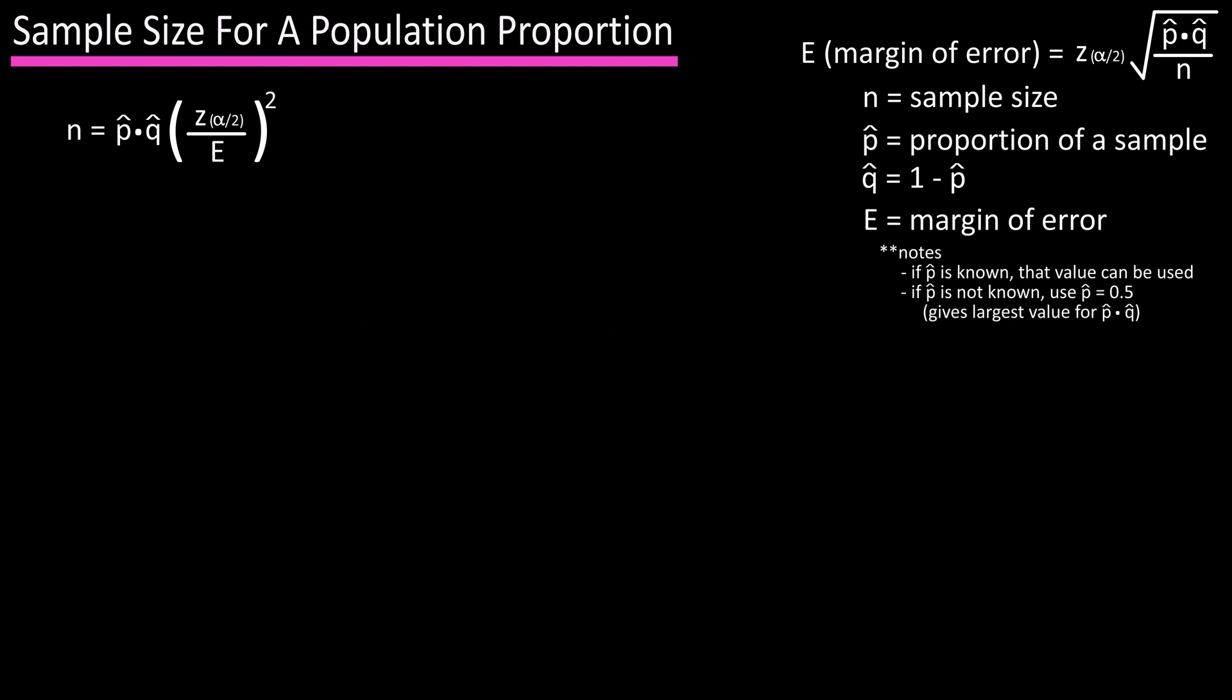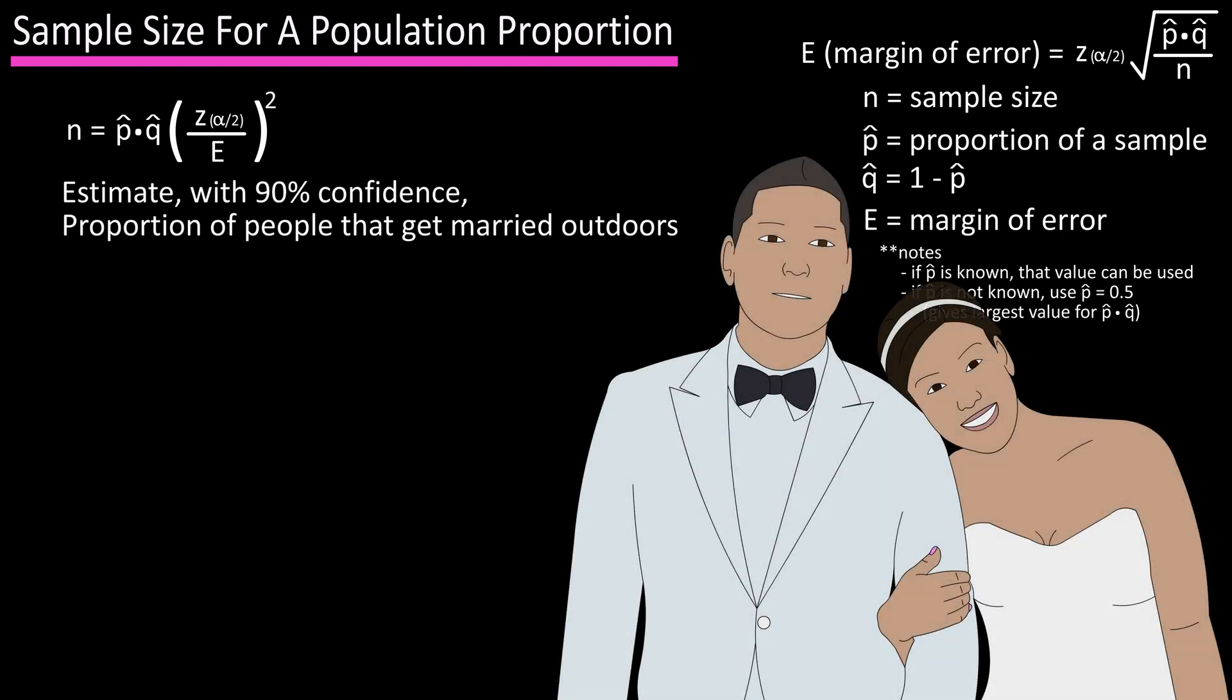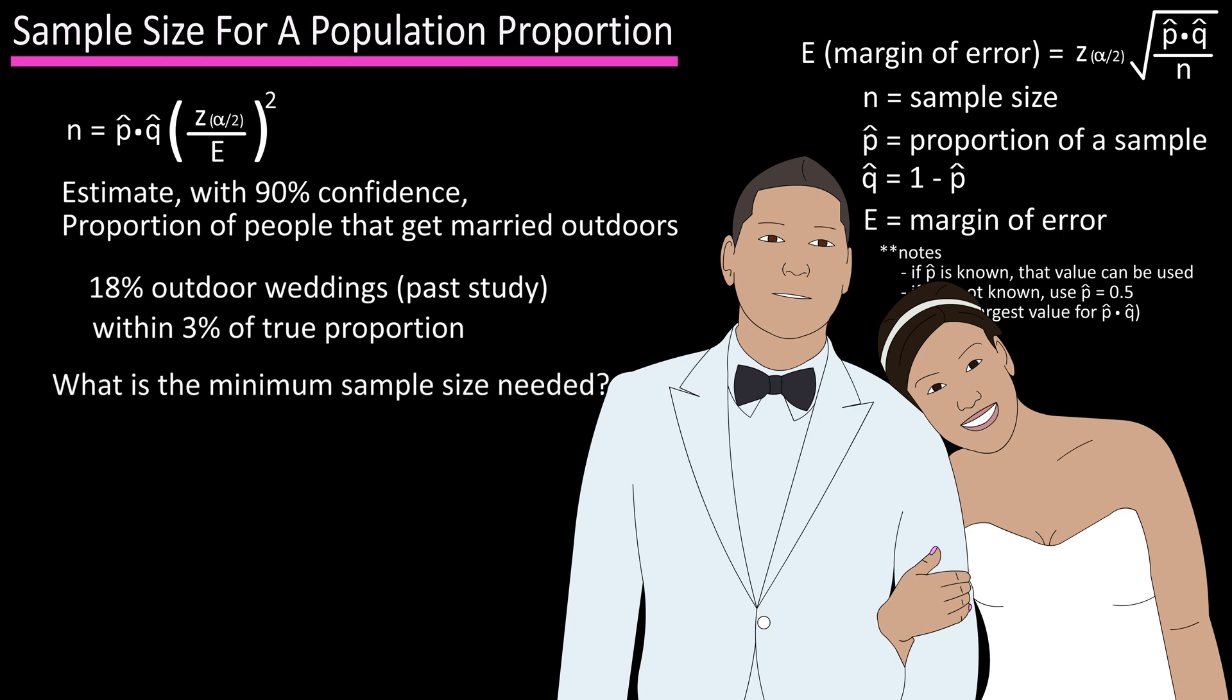Now for an example, let's say you want to estimate with 90 percent confidence the proportion of people that get married outdoors. A previous study showed that 18 percent of people had outdoor weddings. You want to be accurate within 3 percent of the true proportion. What's the minimum sample size necessary?